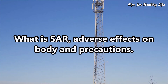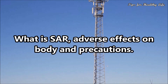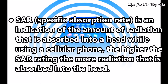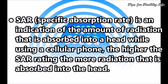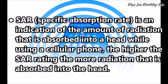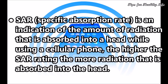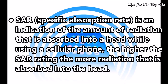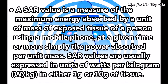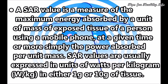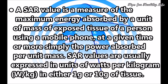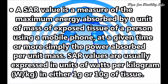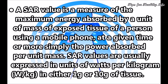What is the SAR, Adverse Effects on Body and Precaution? SAR, Specific Absorption Rate, is an indication of the amount of radiation that is absorbed into a head while using a cellular phone. The higher the SAR rating, the more radiation that is absorbed into the head. A SAR value is a measure of the maximum energy absorbed by a unit of mass of exposed tissue of a person using a mobile phone, at a given time, or more simply, the power absorbed per unit mass.